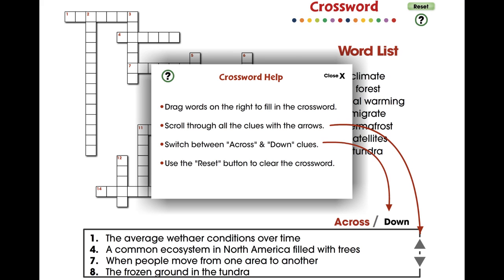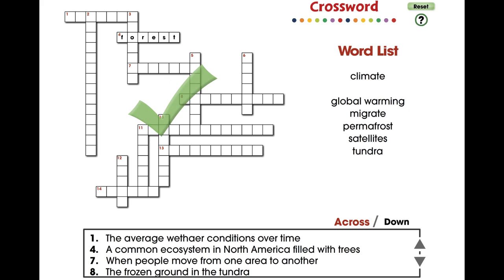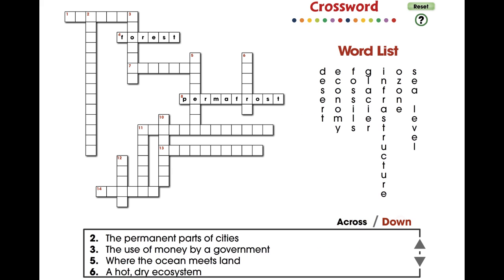In this crossword mini, 14 vocabulary words are provided with across and down clues. For middle school, this mini is great for vocabulary and comprehending all the words centered around the topic of global warming effects.